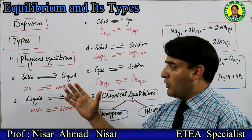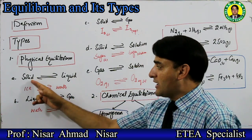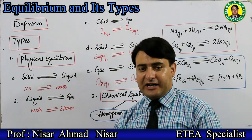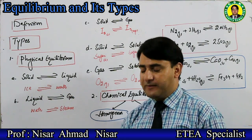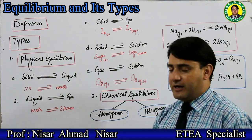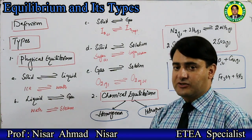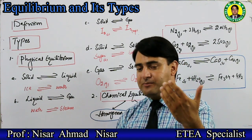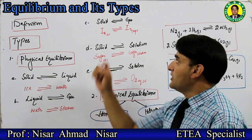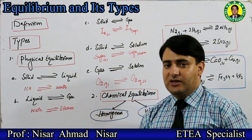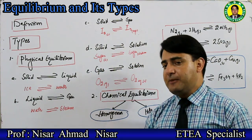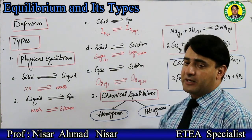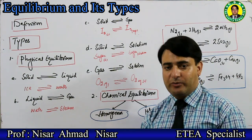Physical equilibrium examples include: solid and liquid equilibrium, such as ice and water. Liquid and gas equilibrium occurs in a closed container, such as water and water vapor - steam. Solid and vapor equilibrium also occurs in a closed container.